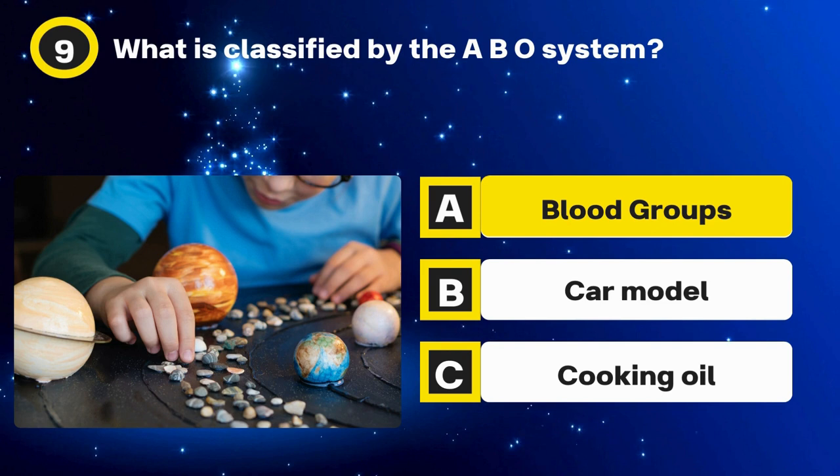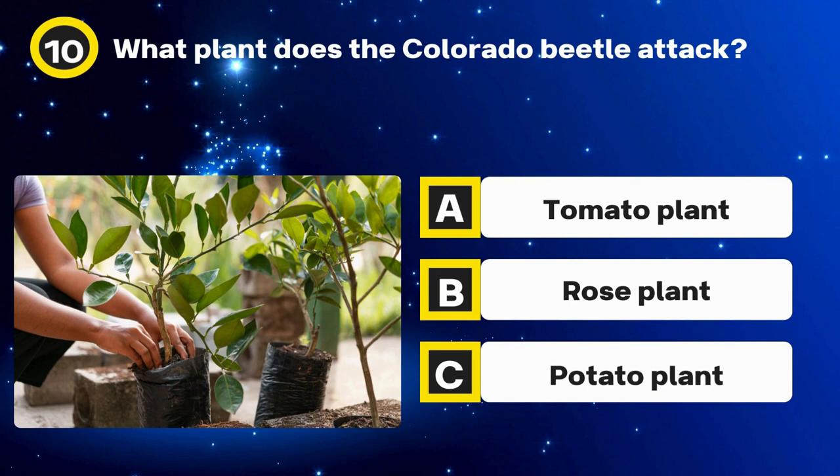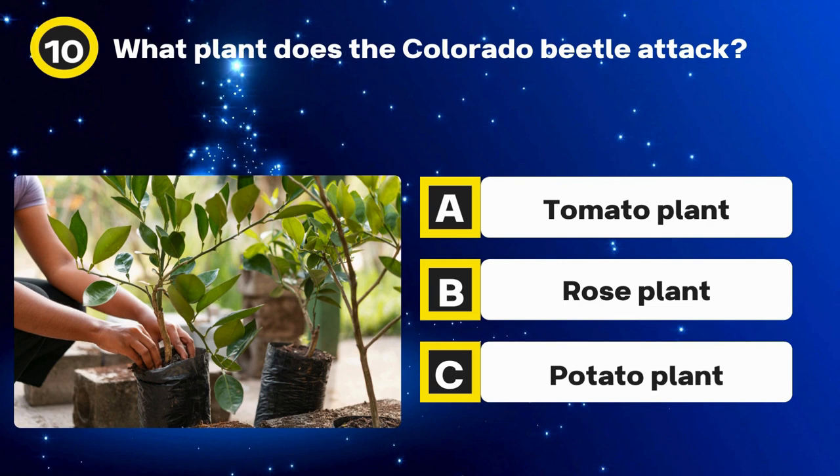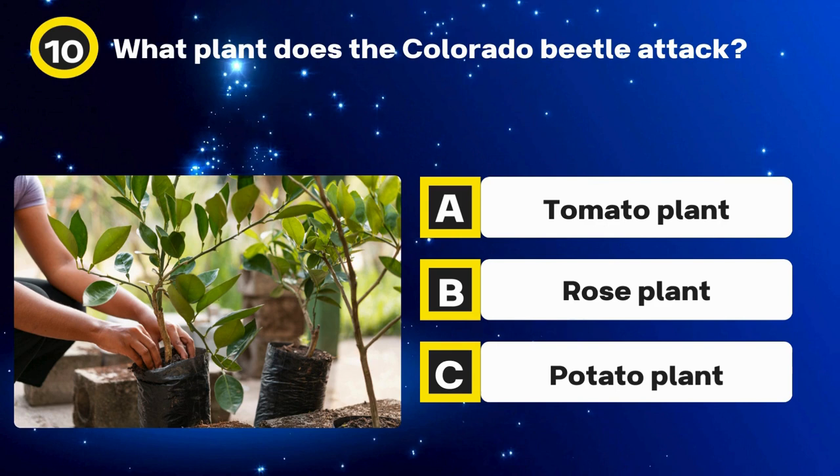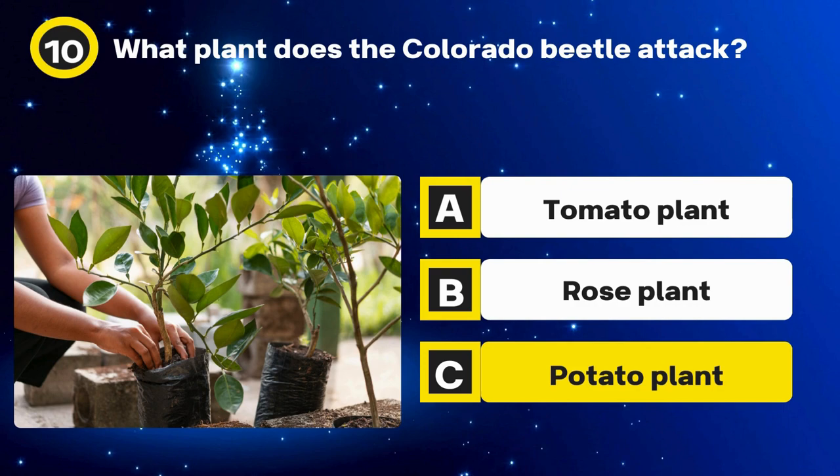Question 10. What plant does the Colorado Beetle attack? Options: Tomato plant, Rose plant, Potato plant. The answer: Potato plant.